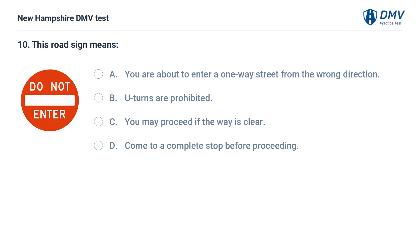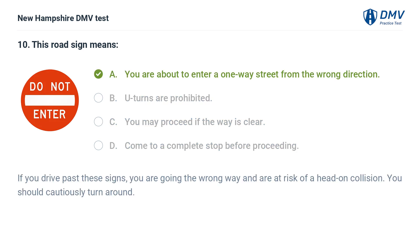This road sign means: A) you are about to enter a one-way street from the wrong direction, B) U-turns are prohibited, C) you may proceed if the way is clear, D) come to a complete stop before proceeding. The answer is A, you are about to enter a one-way street from the wrong direction. If you drive past these signs, you are going the wrong way and are at risk of a head-on collision. You should cautiously turn around.